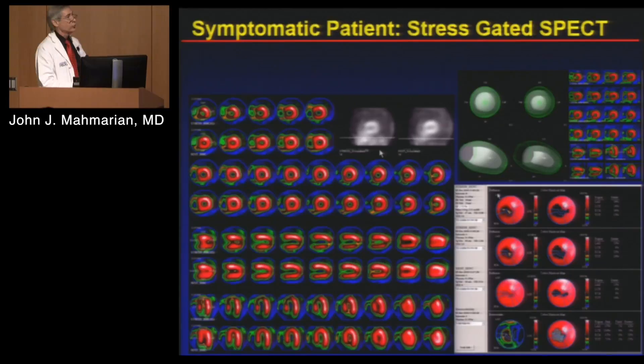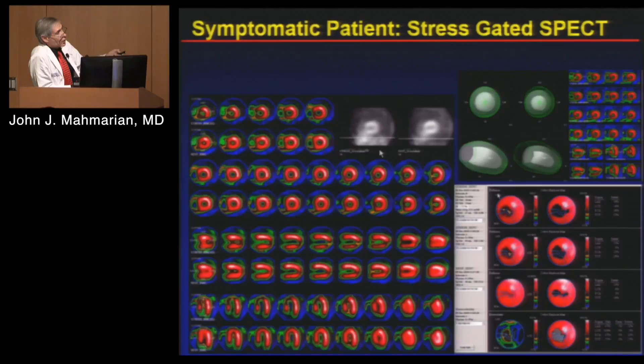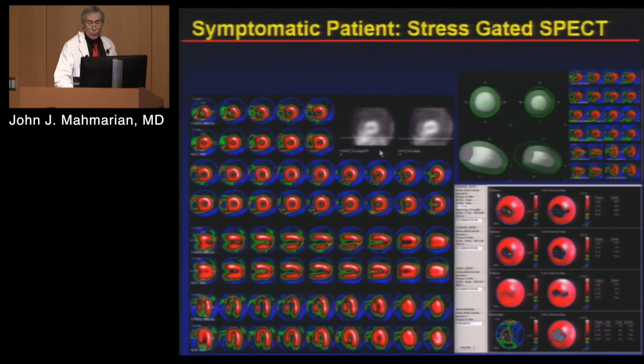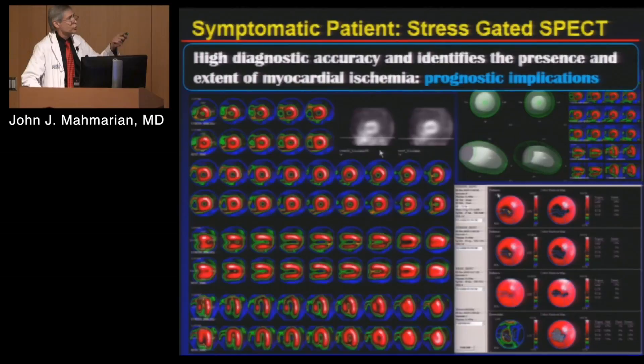Looking at images: a patient with a stress myocardial perfusion scan shows a defect in the septum on stress images that gets better on rest images. We can look at wall motion using gated SPECT in terms of ejection fraction, and we can quantify defects. This patient has approximately a 20% ischemic defect as shown on the polar maps. Putting everything together — looking at images, diagnosing coronary disease, identifying the presence and extent of ischemia — clearly has prognostic implications.